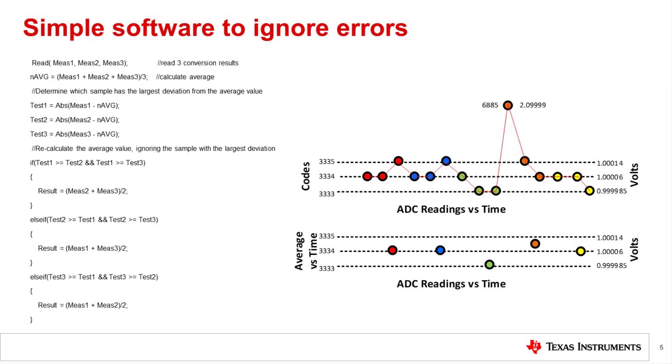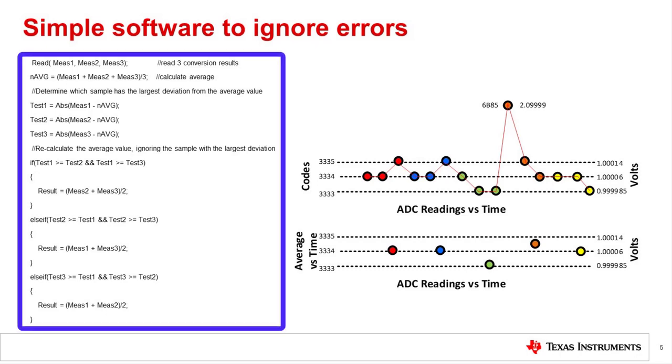Another approach to eliminating data communications errors is to assume that the communication error is infrequent and search for an unexpected data value. For example, assume you are reading a DC or slow-moving value. In this case, you would expect three subsequent measurements to have similar values. In this example, the DC value of approximately one volt is being read. One point in the data sequence contains an error that is significantly different from the other values. In this kind of situation, it may be possible to use a simple algorithm to detect and eliminate the bad reading. The code shown averages three readings and looks for the largest deviation from the average.